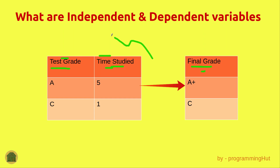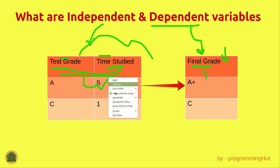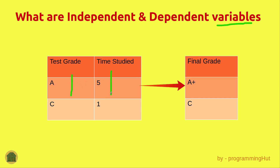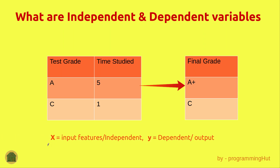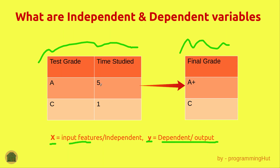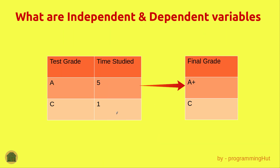The dependent variable will be the final grade, and the independent variables will be test grade and time studied, because we are predicting the final grade based on those two. So final grade is the dependent variable and the other two are the independent variables. A variable is just a column — test grade, time studied, and final grade. By convention when we start coding, we use x for the input side and y for the output side. Y is the dependent variable we are trying to predict, and x represents the input features, also called independent variables.